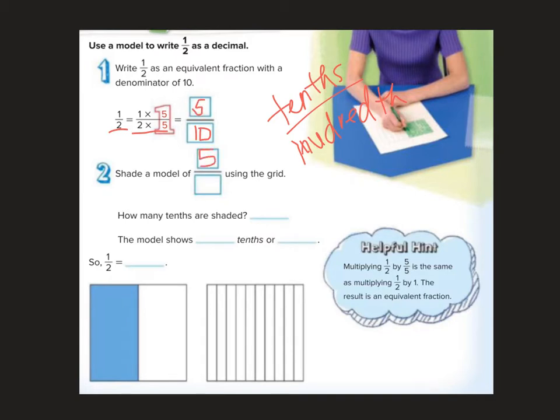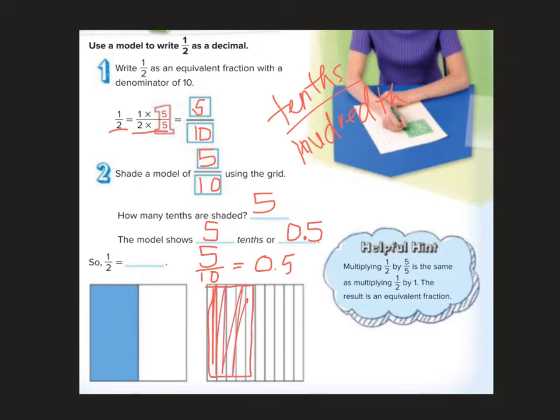So if we shaded a model of 5 tenths using the grid, how many tenths would be shaded? There would be 5. The model shows 5 tenths or we can write 5 tenths like this. It's 0.5. It's the same as 5 tenths. So therefore, 5 tenths is the same as 5 tenths. So 1 half, if we wanted to write 1 half as a decimal, I need to color in 5 of these tenths marks. And I would write it as 5 tenths. Kind of neat, huh?